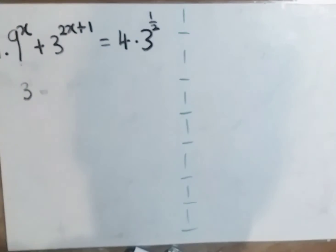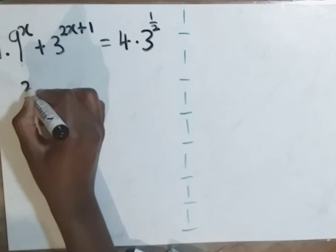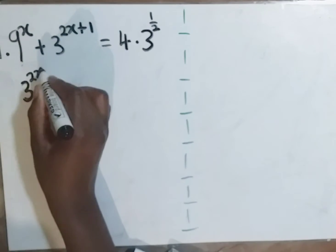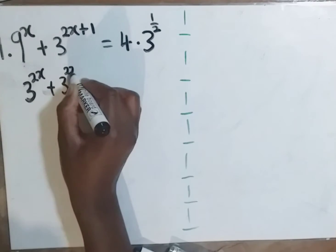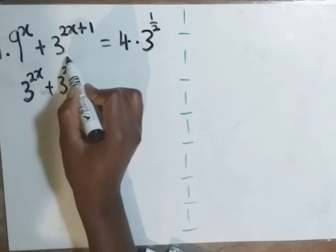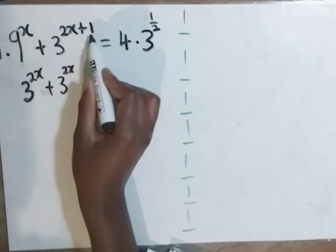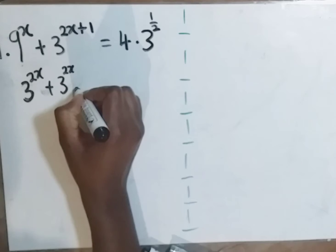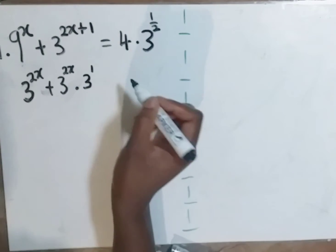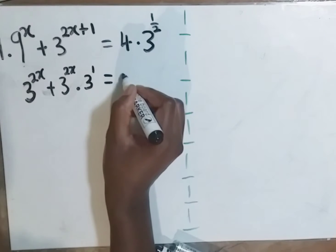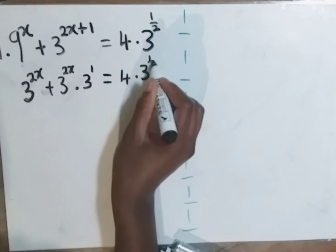So this is going to be 3 to the power 2x plus 3 to the power 2x plus 1. I'm sure you still remember from your laws of indices - if it's 3 to the power 2x plus 1, it means it was 3 to the power 2x times 3 to the power 1. This is all equal to 4 dot 3 to the power half.